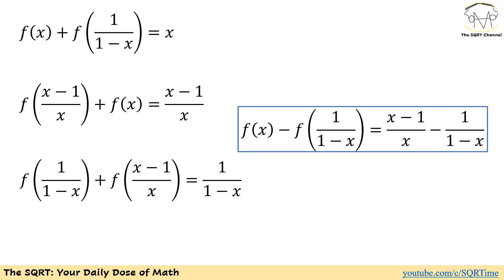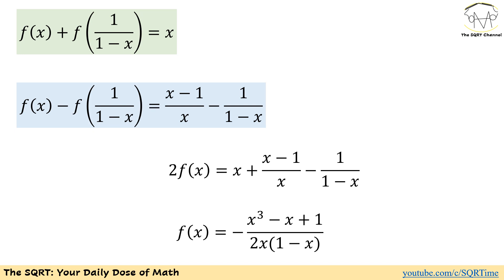Let's focus on the last two equations and remove f((x-1)/x). We end up with f(x) - f(1/(1-x)) = (x-1)/x - 1/(1-x). Now focusing on the first equation and this new one together, we can see that f(1/(1-x)) can be eliminated. If we do this, then 2·f(x) equals x plus (x-1)/x minus 1/(1-x).